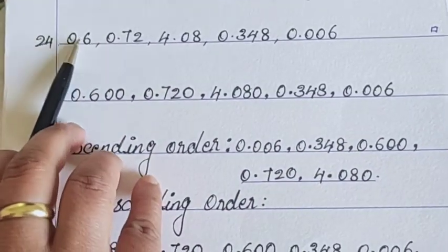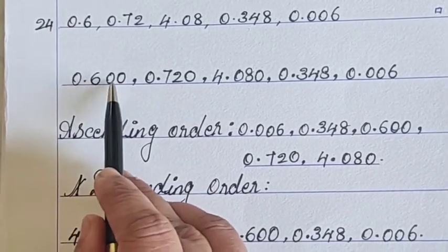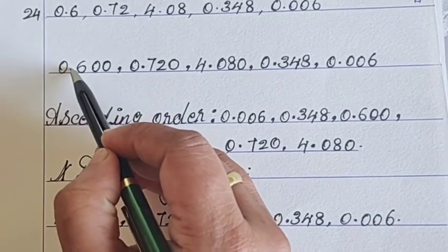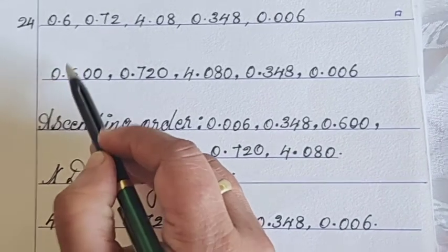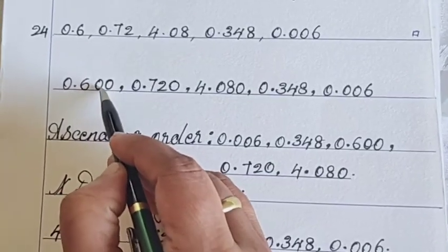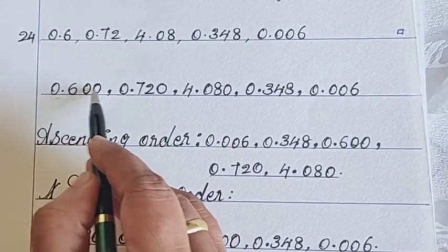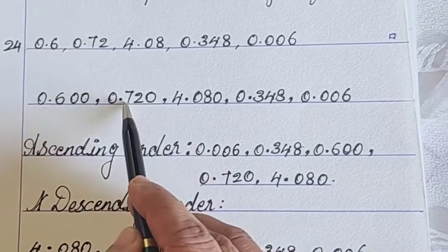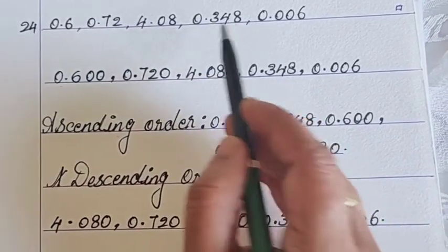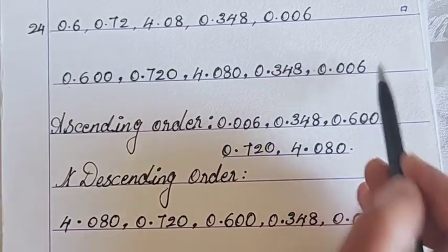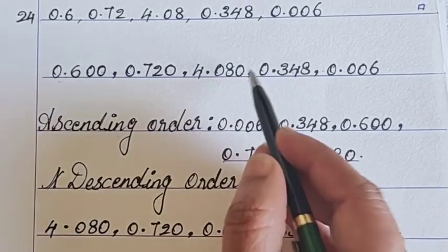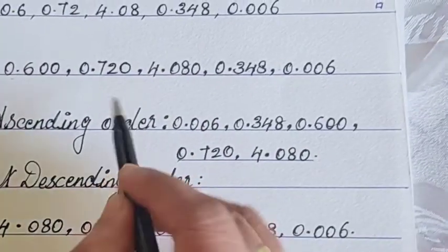So, instead 0.6, we can write 0.600. Don't change the place values. 6 is after this point, after the point. You cannot change the place values of the number. Only add zeros. 0.600, 0.720, 4.080, 0.348, 0.006. Now all the numbers, all the decimal numbers are in like decimals.